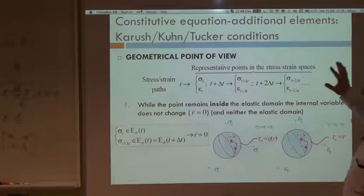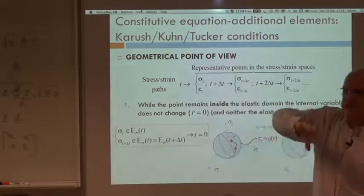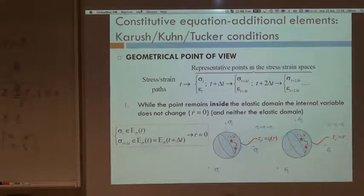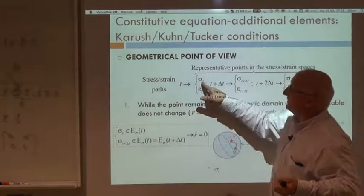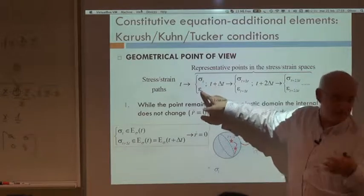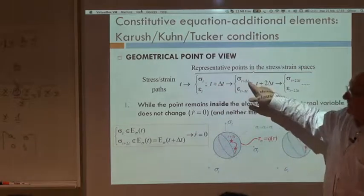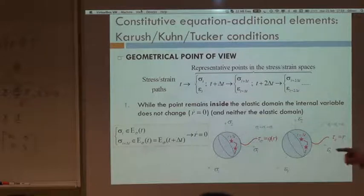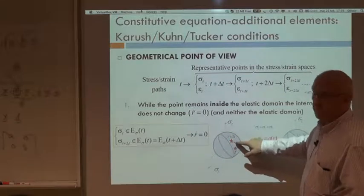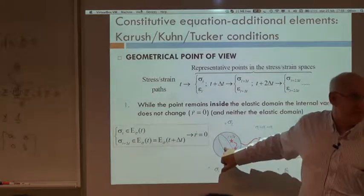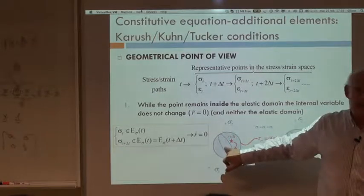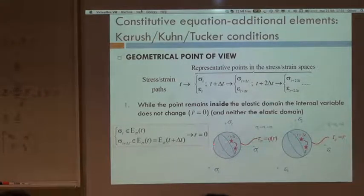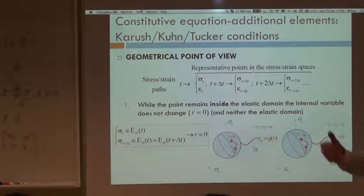Imagine that we have a history of stress-strains. According to the loading imposed at every point, we have a history of the stresses and a history of the strains. At a certain time we have a certain stress — a second-order tensor — and certain strains. At a subsequent time T plus delta T, we have sigma(T+ΔT), epsilon(T+ΔT), and so on. In the stress space, we are following certain paths, starting always at the origin for a virgin material.